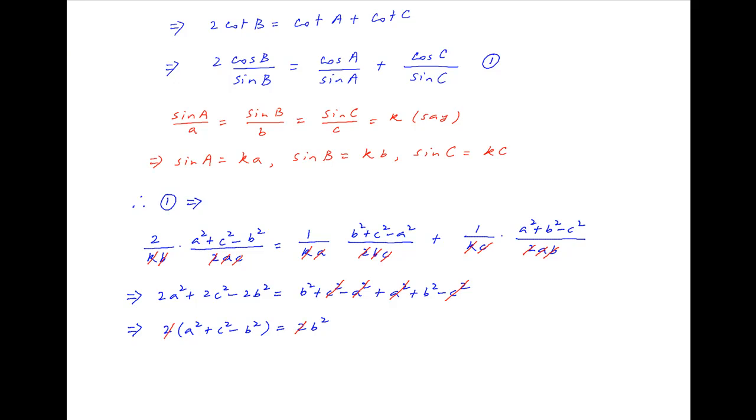2 cancels across the left hand side and the right hand side. And so we are left with a square plus c square is equal to 2b square. And therefore, a square, b square, c square are in arithmetical progression, which completes the proof.